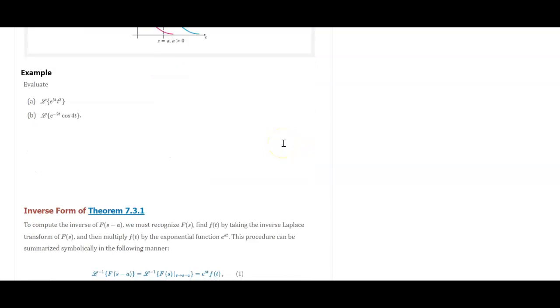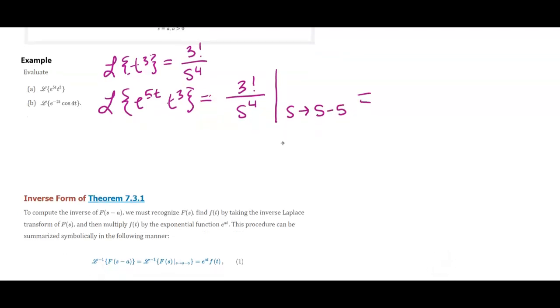So let's look at an example. If I wanted to find the Laplace of e to the 5t times t cubed, then I could say, well, the Laplace of t cubed is 3 factorial over s to the fourth. Therefore, the Laplace of e to the 5t times t cubed is 3 factorial over s to the fourth, and then we say where s goes to s minus 5. And so that's going to be 3 factorial over s minus 5 to the power of 4.